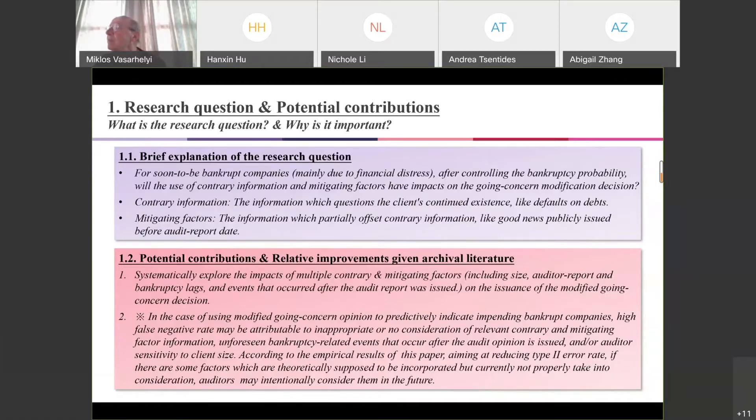As for the mitigating factors, that includes information which partially offsets the contrary information, like good news publicly issued before audit report date. For example, if a corporation issued that they will develop some very good and advanced products, this good news can make the auditors have confidence that this corporation has capabilities to weather the financial distress. These factors include size, audit report and bankruptcy lags, and events that occurred after the audit report was issued.